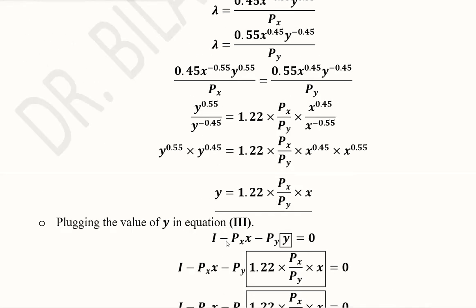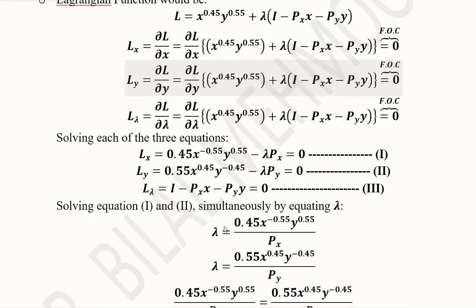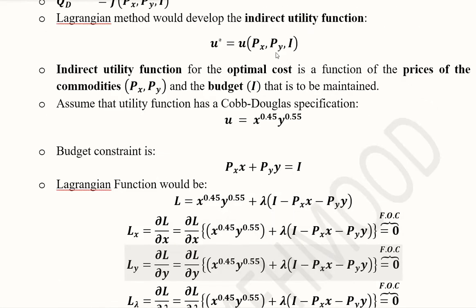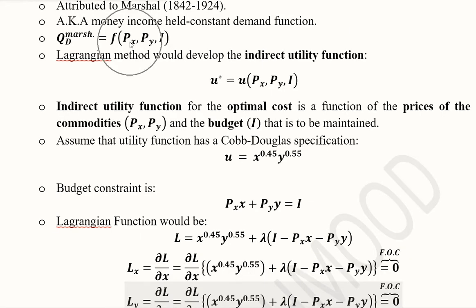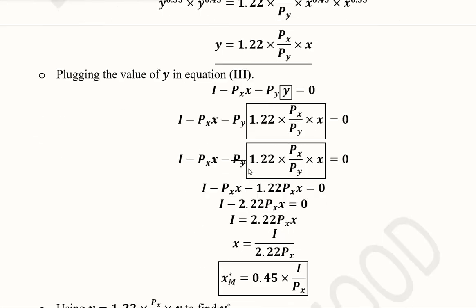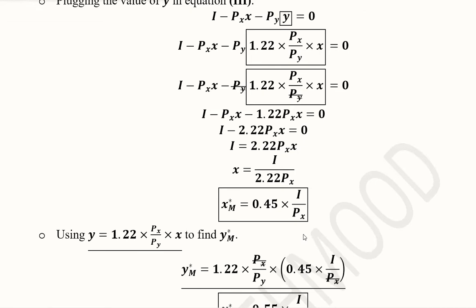This result is in line with the standard form of the Marshallian demand function, which should contain prices and the budget. As you can see, the final answer for X contains the price PX and the budget I. X's demand depends on its own price, not on the price of the other good, which would only be the case if they were related goods.